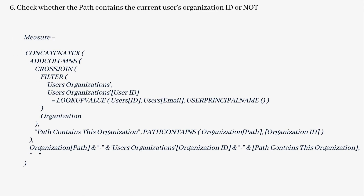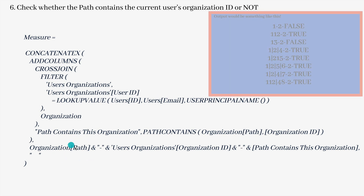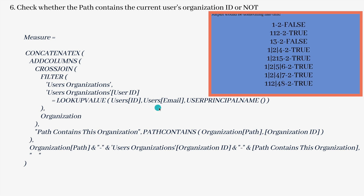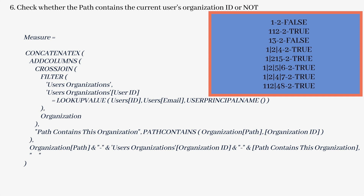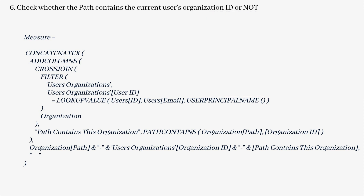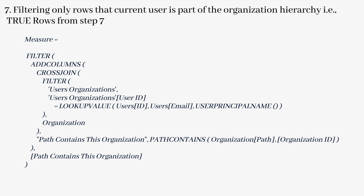In the next step, we check whether the PATH contains the current user's organization ID, using the DAX expression with ADDCOLUMNS. In ADDCOLUMNS, we are creating two more columns — one is 'PATH contains this organization' and the second is your 'organization PATH.' We use CONCATENATEX, ADDCOLUMNS, and all the expressions from step 5. Then we filter only the rows where the current user is part of the organization hierarchy — that means only rows where the value comes back as TRUE — using the same expression from step 6.